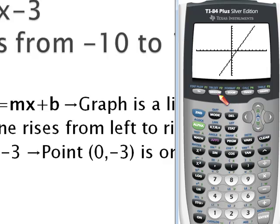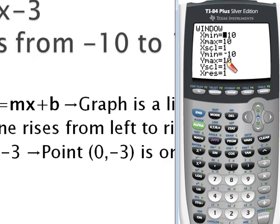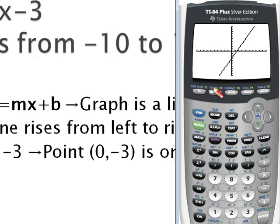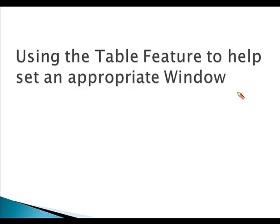I could go back to my window and increase my y max and my y min to hopefully capture what's happening up here and down here. But I don't know the exact values to use. So at this point, I would really be just taking a guess. And this guess and check method can take a long time. So we can use a table of input-output values as a more direct way to determine the range of y values that we will need. So let's do that. Let's use the table feature to help set up an appropriate window.